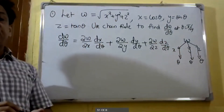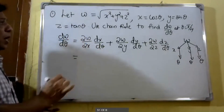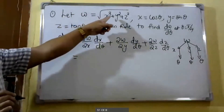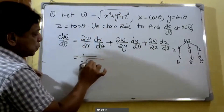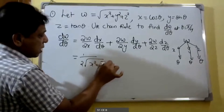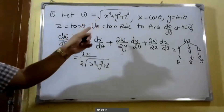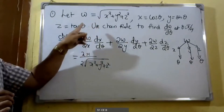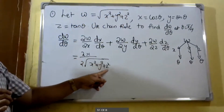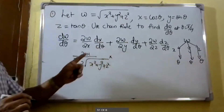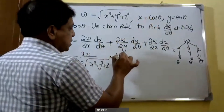Using this result we can find the value of dw/dθ by substituting the values. Partially differentiating w = √(x² + y² + z²) with respect to x, we get ∂w/∂x = (1/2)·(1/√(x² + y² + z²))·2x = x/√(x² + y² + z²). And dx/dθ: since x = cos θ, differentiating gives dx/dθ = −sin θ.